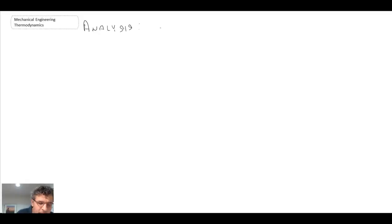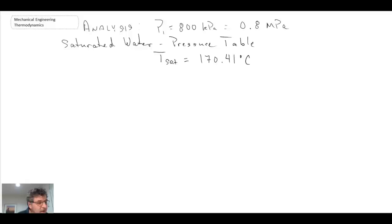So for analysis, pressure P1 is 800 kPa, which is also 0.8 MPa. We were in the two-phase region at state 1 as shown on the schematic. So we can go into our tables at the back of the book, specifically the saturated water pressure table, because we know the pressure. If we look for a pressure of 800 kPa, we will find the saturation temperature. From the table, we can determine that the saturation temperature is 170.41 degrees C.